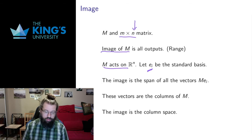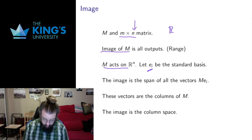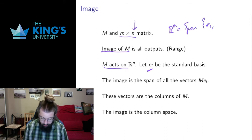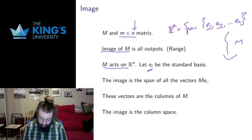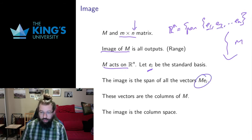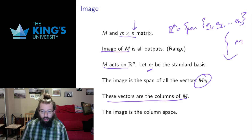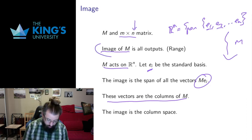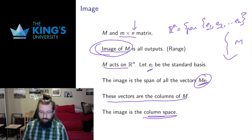Since the standard basis is a basis, Rn can be written as the span of e1, e2, up to en. So where does this go under the transformation? It goes to the span of m acting on each of these — the span of m(e1), m(e2), all the way up to m(en). It turns out these vectors are exactly the columns of m. So the image, the set of all outputs, is the same as the span of the columns, because the columns are exactly m acting on the standard basis vectors.